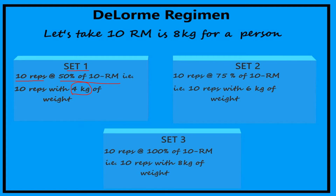When he progresses to set 2, the person is going to perform the same 10 reps, but now the resistance is increased by 25%, so the person is now going to perform with 75% of the 10RM — that is, 6 kgs of weight.